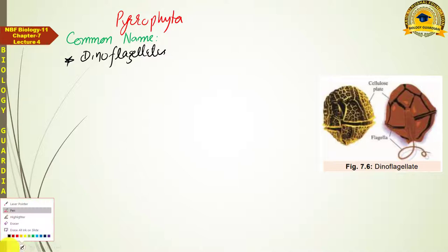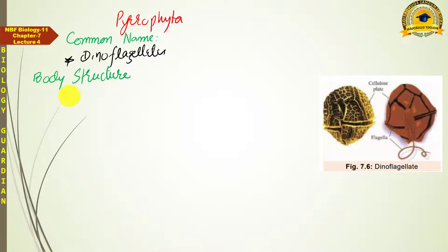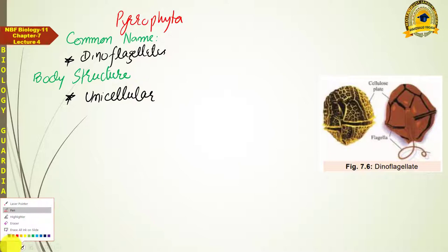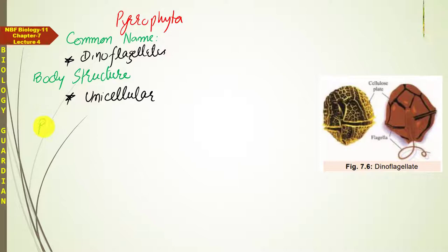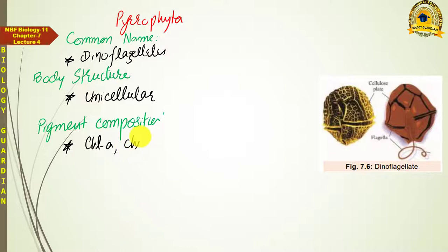The body structure of Dinoflagellates is again unicellular, just like Euglenoids — all of them are unicellular. The majority of them are found in marine ecosystems. Their pigment composition includes Chlorophyll A along with Chlorophyll C, and carotenoids. So here there is no Chlorophyll B — it is Chlorophyll A and C along with carotenoids.